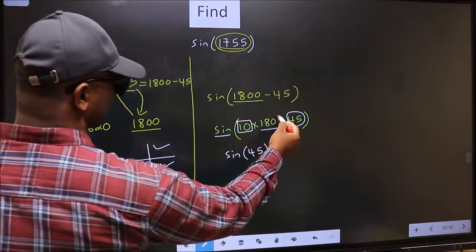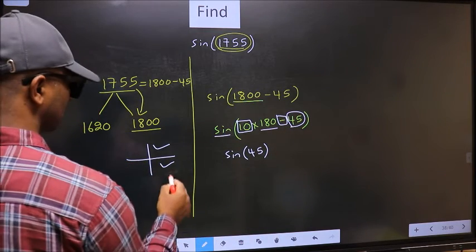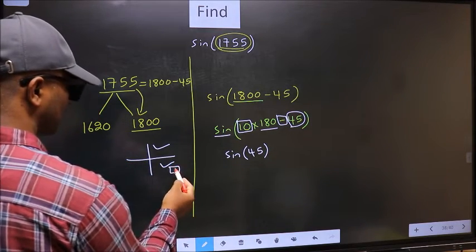So now to select the quadrant, we should look at this symbol. Here we have negative. That means the angle lies in the fourth quadrant.